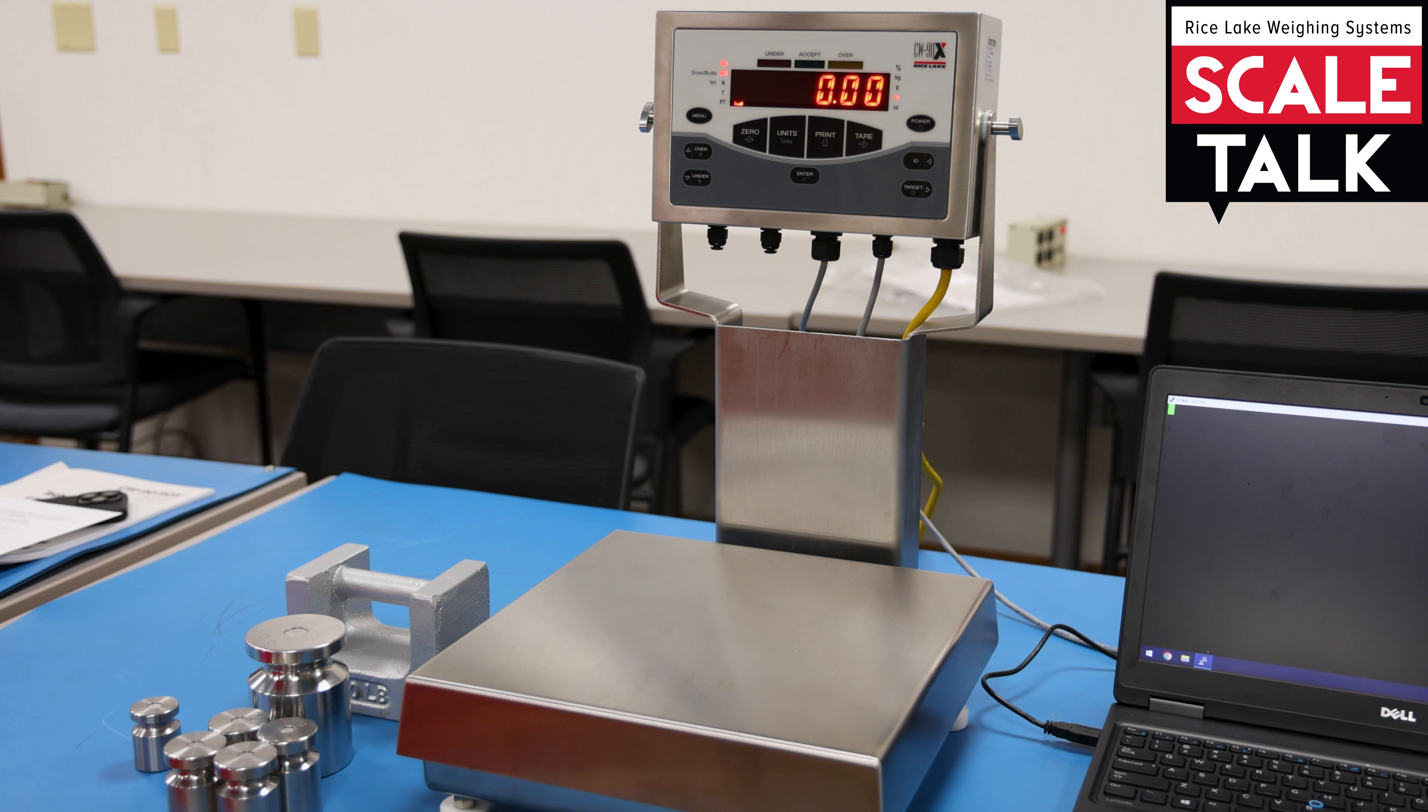And while somebody could do that with a standard scale and simply look at the weight on the display, the check weigher and its visual feedback is going to help remove some of the guesswork out of it, help minimize the mistakes that might be made at the human side of things.